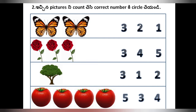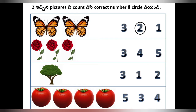Now I will circle here. Next, how many roses are there? 1, 2, 3 roses are there. Where is 3 in this land? Here is 3. So we have to circle this.